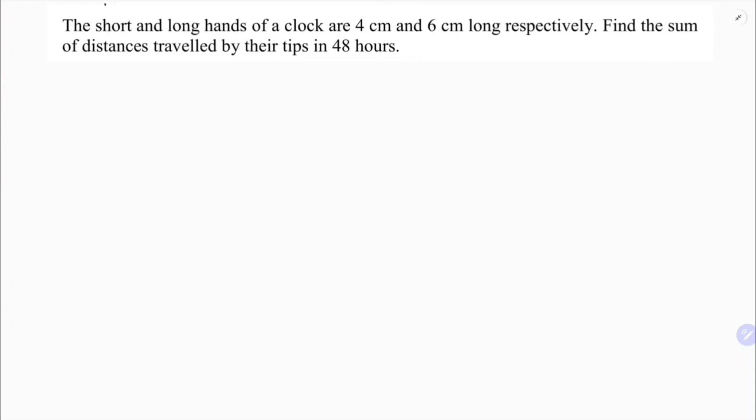The short and long hands of a clock are 4 centimeters and 6 centimeters. The short hand is the hour hand and the longer one is the minute hand. Find the sum of the distance traveled by the tips in 48 hours.